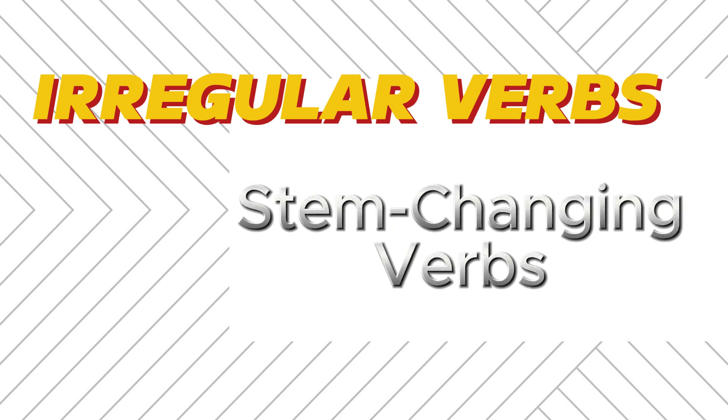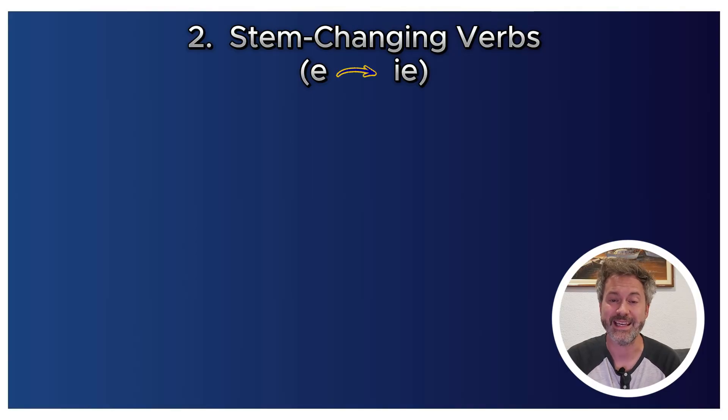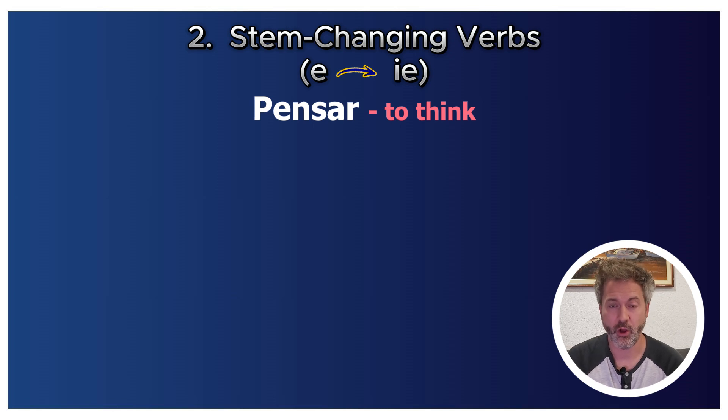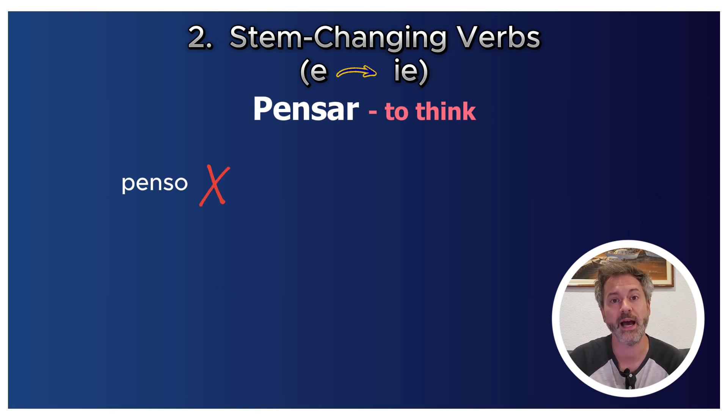Now let's talk about stem-changing verbs, sometimes called boot verbs. These verbs undergo a vowel change in the stem in every form except nosotros and vosotros — and for that reason they're called boot verbs, because if you draw a line around the changing forms, it looks like a boot. There are three main types. The first is a stem change from E to IE.